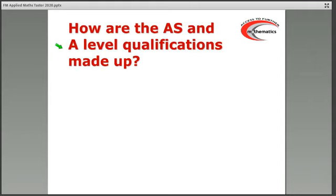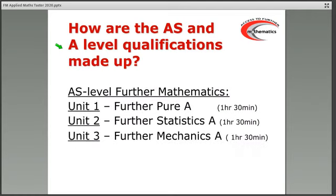First of all, we'll just have a look at how the AS and A-level further maths qualifications are made up. For an AS level in further mathematics, there are three units, which are all equally weighted, all one and a half hour exams. Unit 1 is pure maths. Units 2 and 3 are applied.